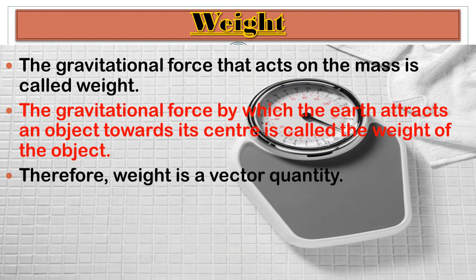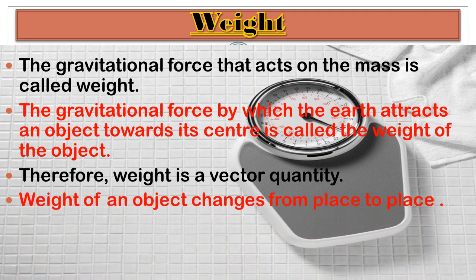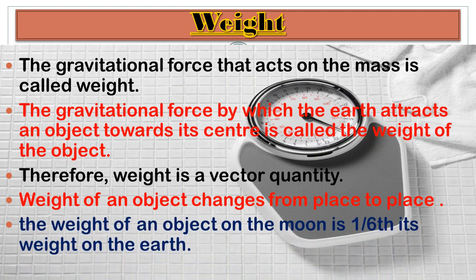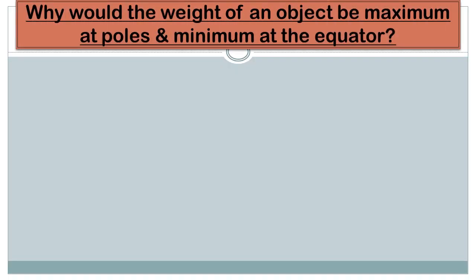Weight is a vector quantity because it is expressed by both magnitude and direction. Weight of an object changes from place to place — this is a basic difference between weight and mass. Mass remains constant everywhere, but weight changes from place to place. The weight of an object on the moon is one-sixth its weight on the earth. So if an object weighs 6 kg on earth, it will weigh 1 kg on the moon.